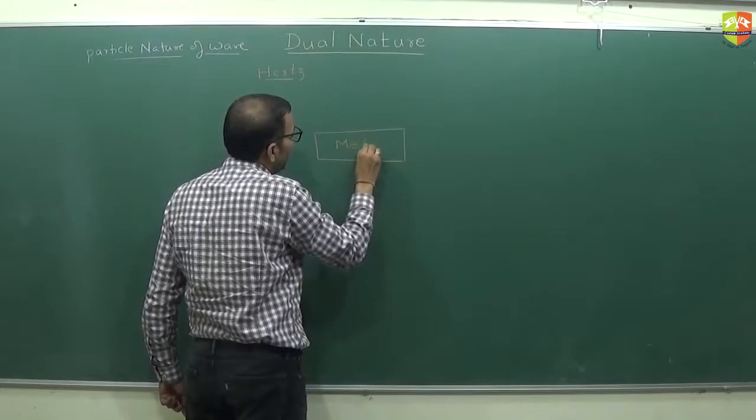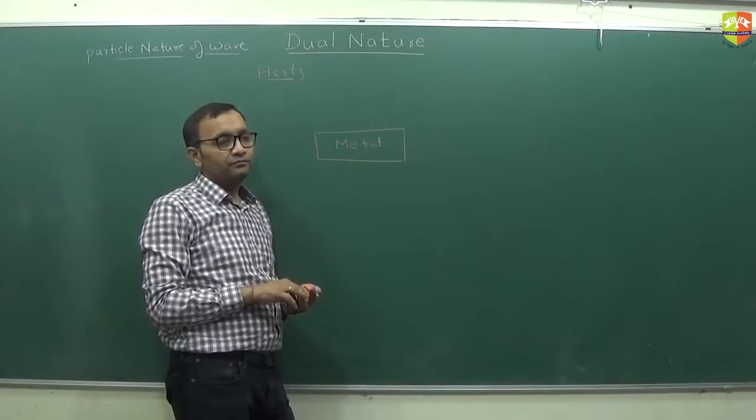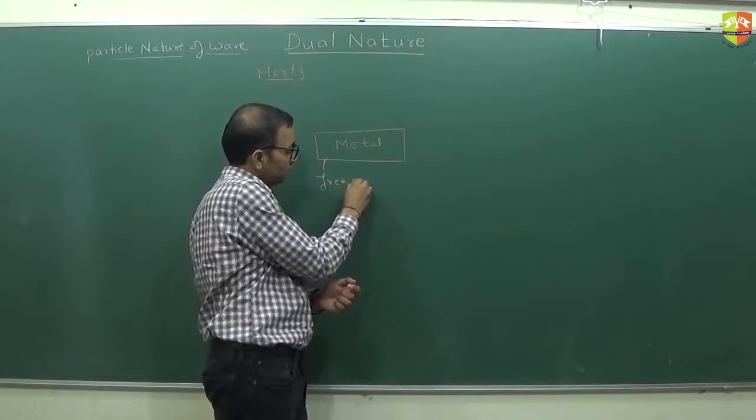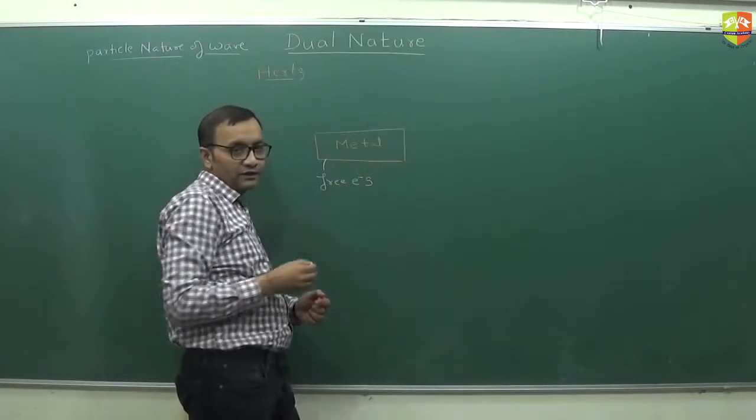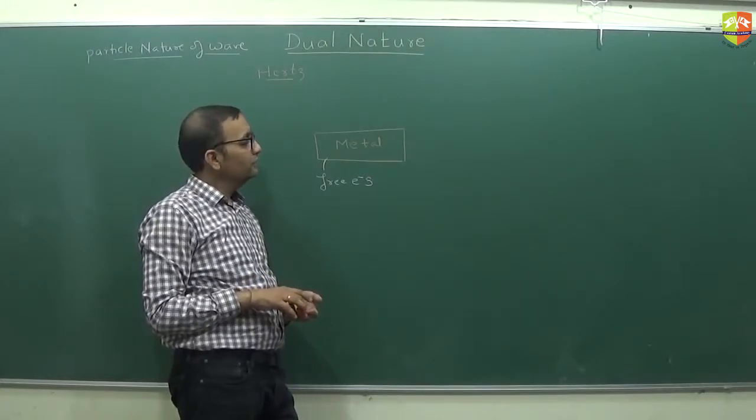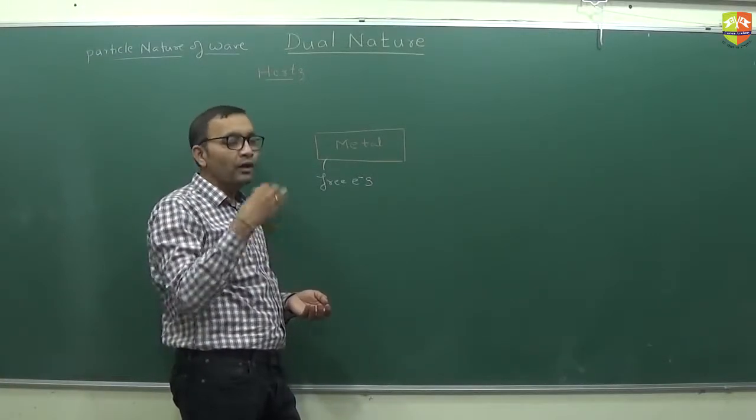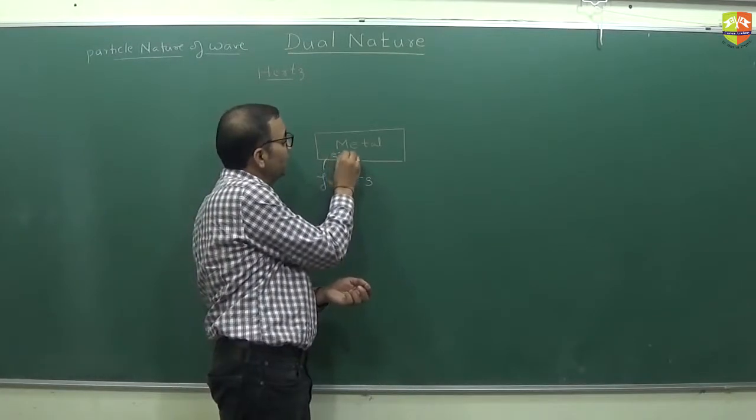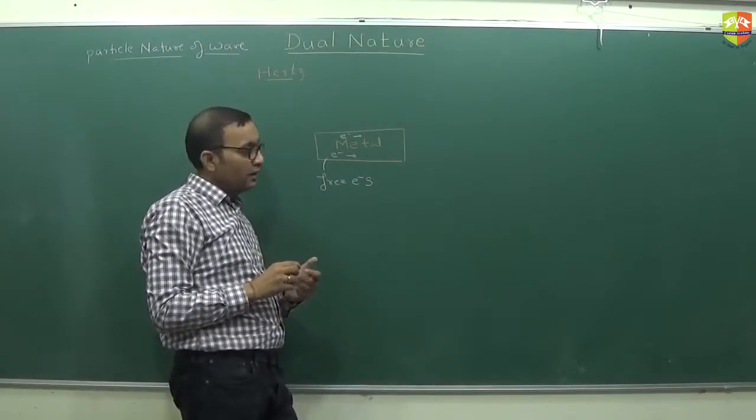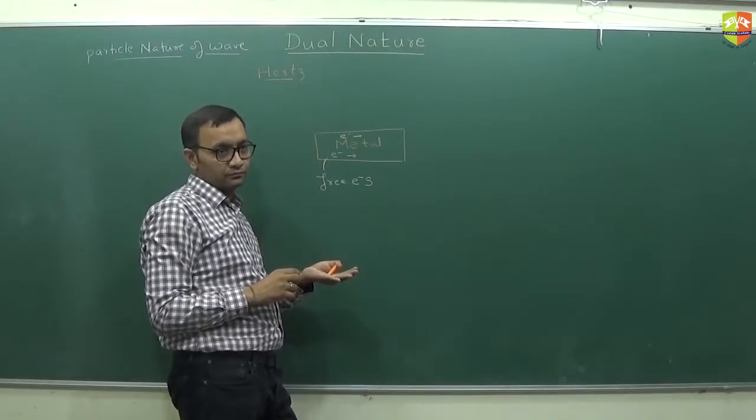So what Hertz has observed is that if you take a metal plate, what does this metal plate consist of? Free electrons. What does it mean, free electrons? Free electrons are like free to move from one atom to other, sorry, one atom to another atom. So there will be like a sea of electrons that are just floating here and there. But then they are not coming out of metal.